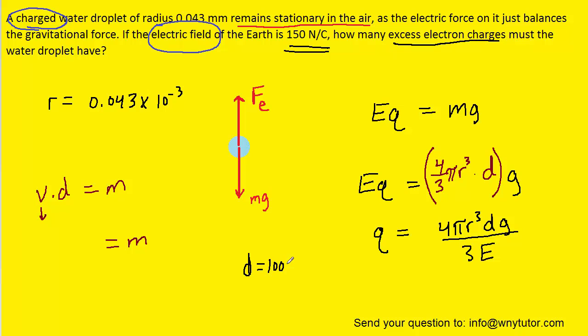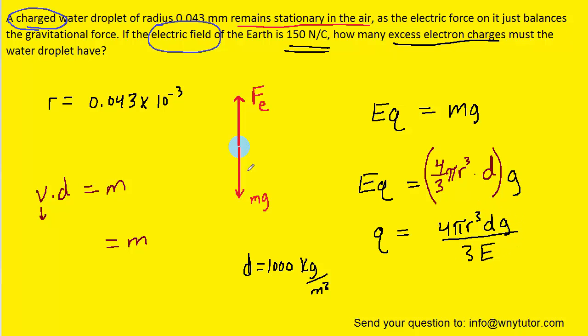And it is equal to 1000 kilograms per meter cubed. And then we have g, which of course is 9.8 meters per second squared. So let's plug in all those known values.